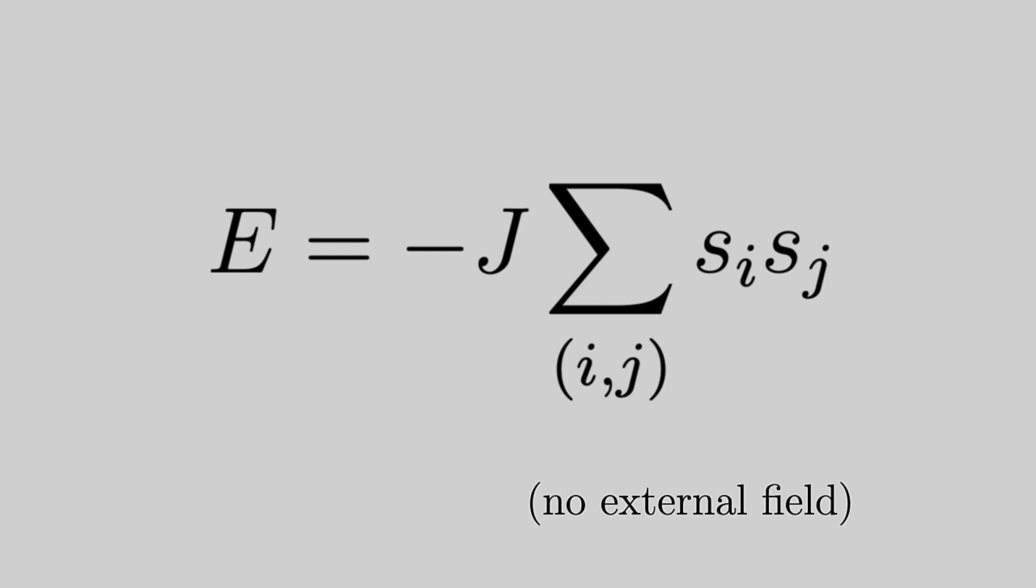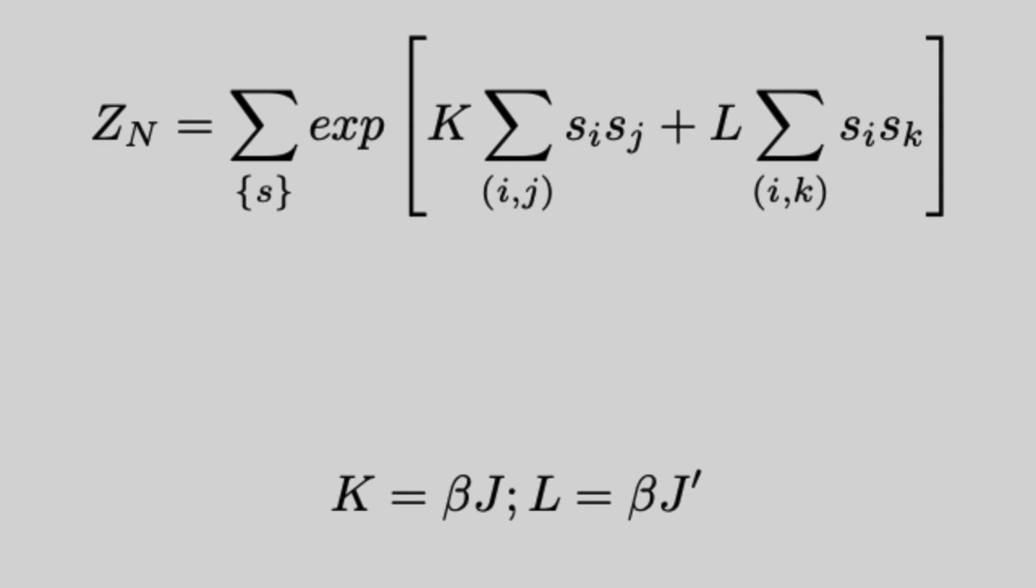But actually for now we're going to generalize and say the coupling constant is different horizontally and vertically. Here's our partition function. So this first sum sums over all possible microstates. It's summing over each possible set of spins. Then for each individual microstate, we're summing over all the nearest interactions horizontally and vertically.